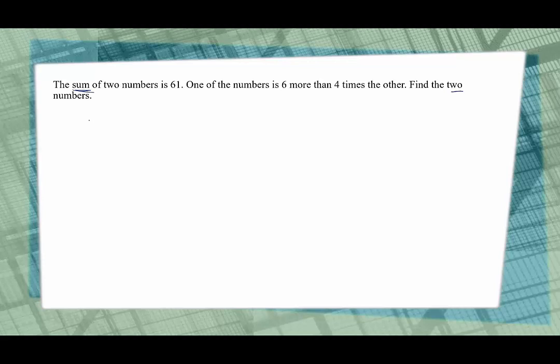What do we know about x and y? We know that the sum of these two numbers, so sum is when we add them, is 61. So we're going to say x plus y is equal to 61. What else do we know about our mystery numbers? We know that one of the numbers is, is implies equals, so one of the numbers, pick one of them. Let's say x is six more than, that's six plus, four times the other. Four times the other, I used x so this one would be y. So the other equation that I have is x equals six plus four y.